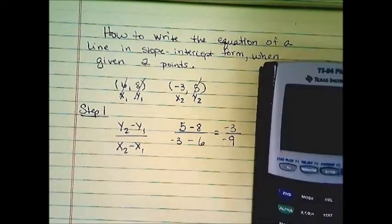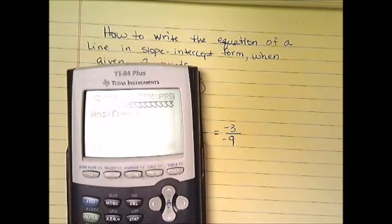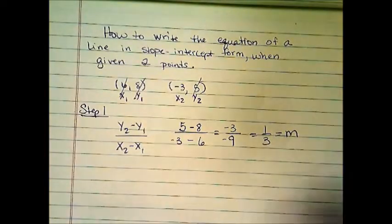If you're not good with that, just put that in your calculator. Negative 3 divided by negative 9. Hit math, enter, enter. We get 1 third. Our m value is 1 third.